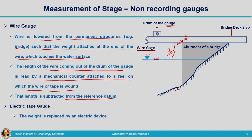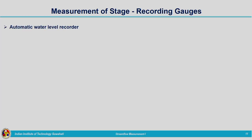The electric tape gauge works similarly to the wire gauge, except the weight is replaced by an electric device. The rest of the mechanism — wire lowered from a drum — remains the same as the wire gauge.